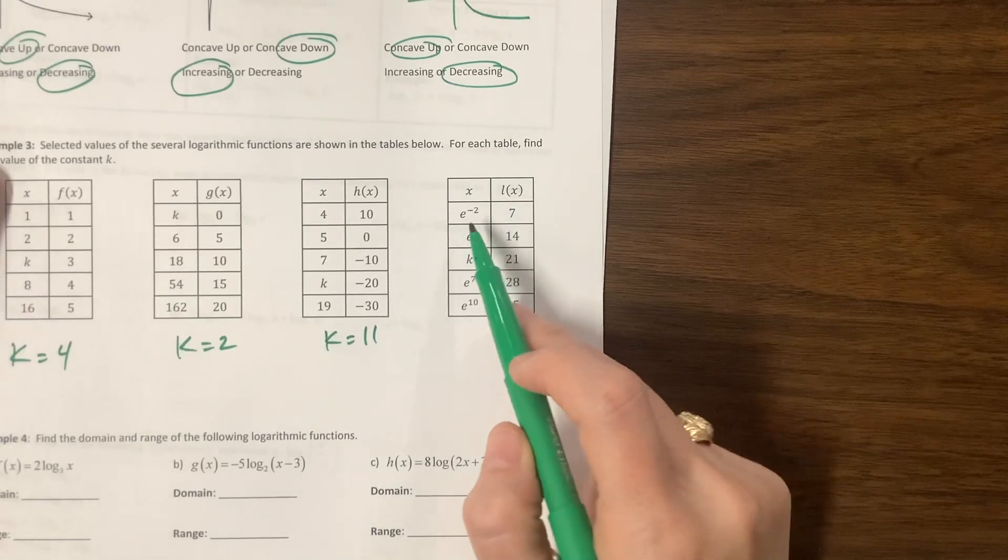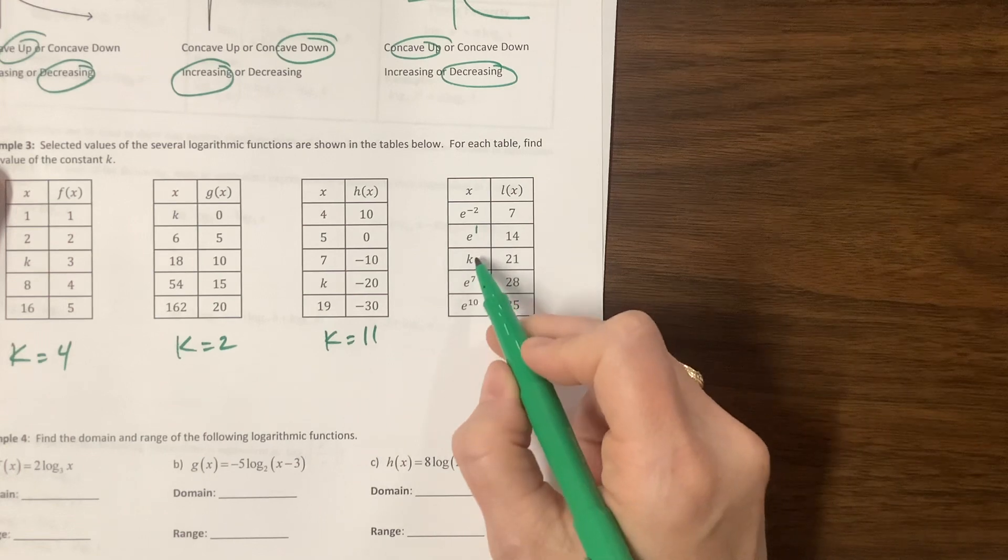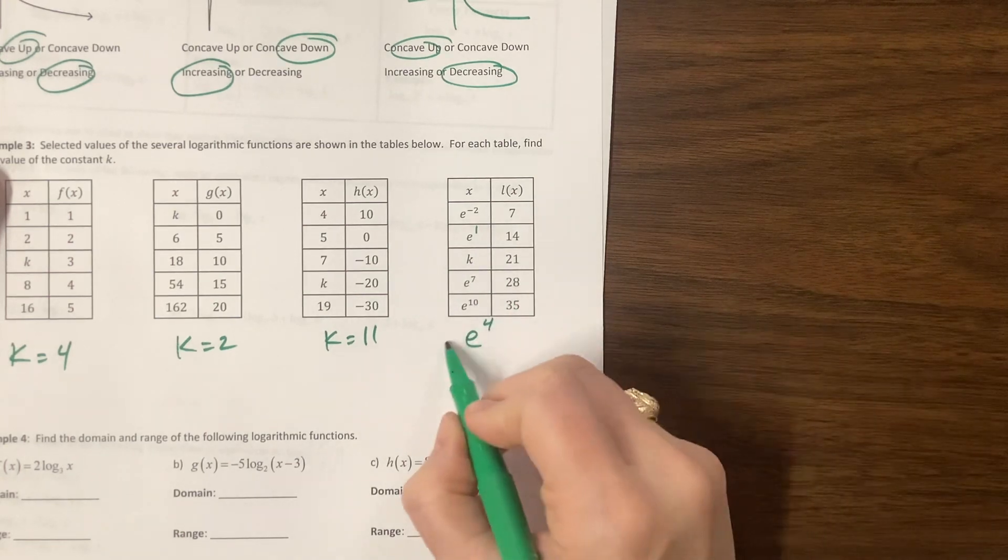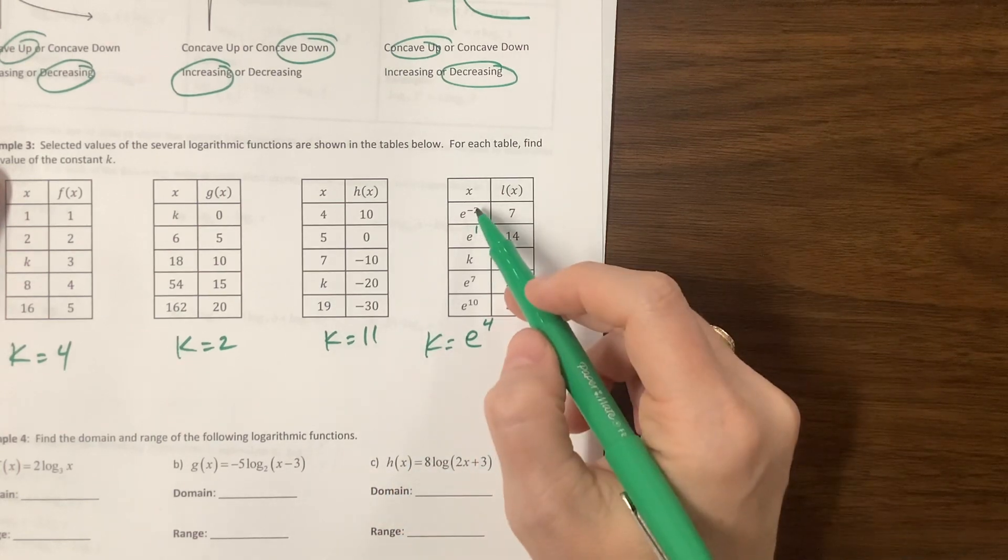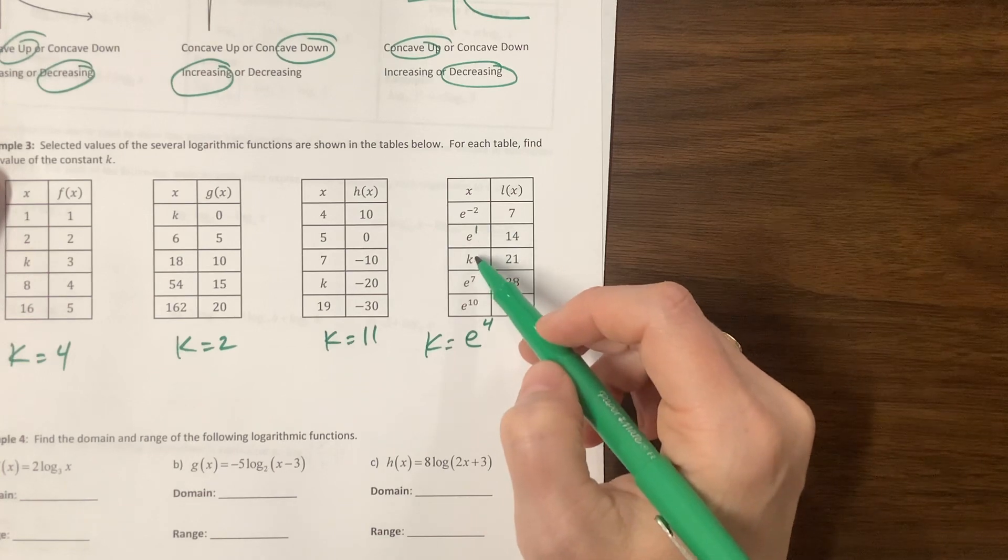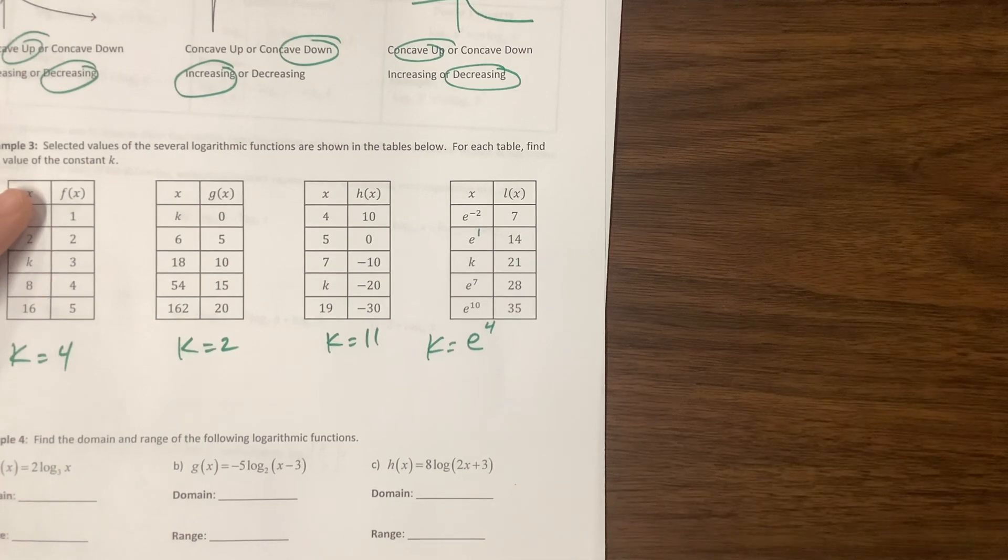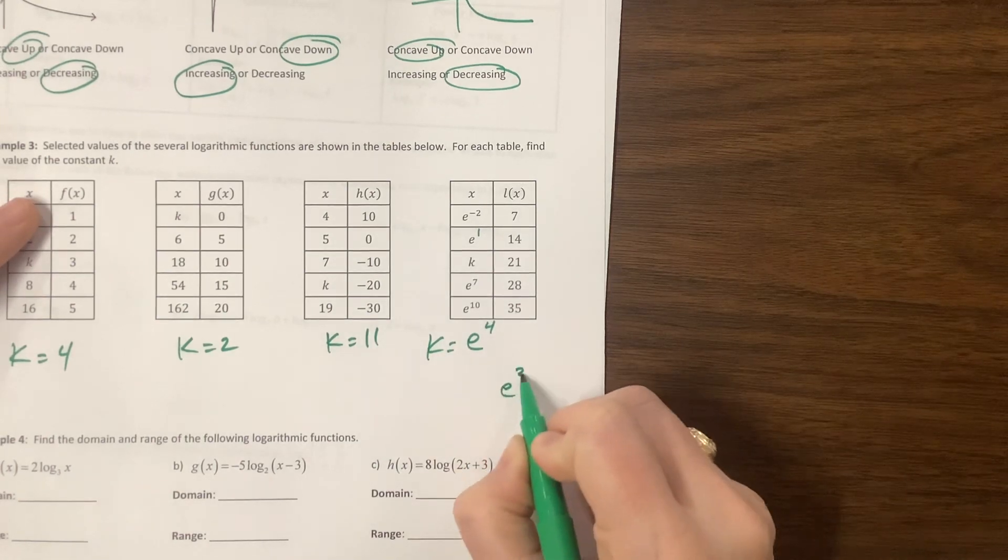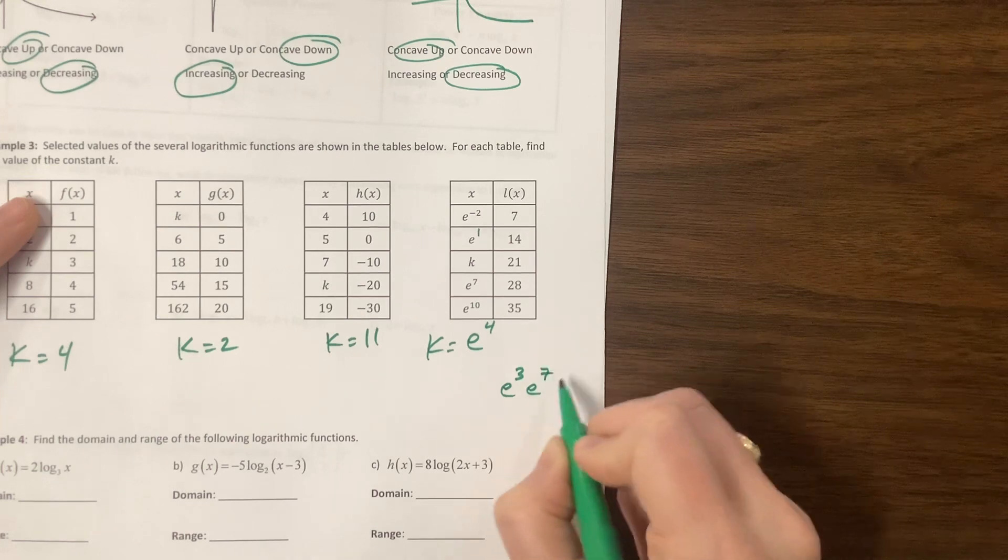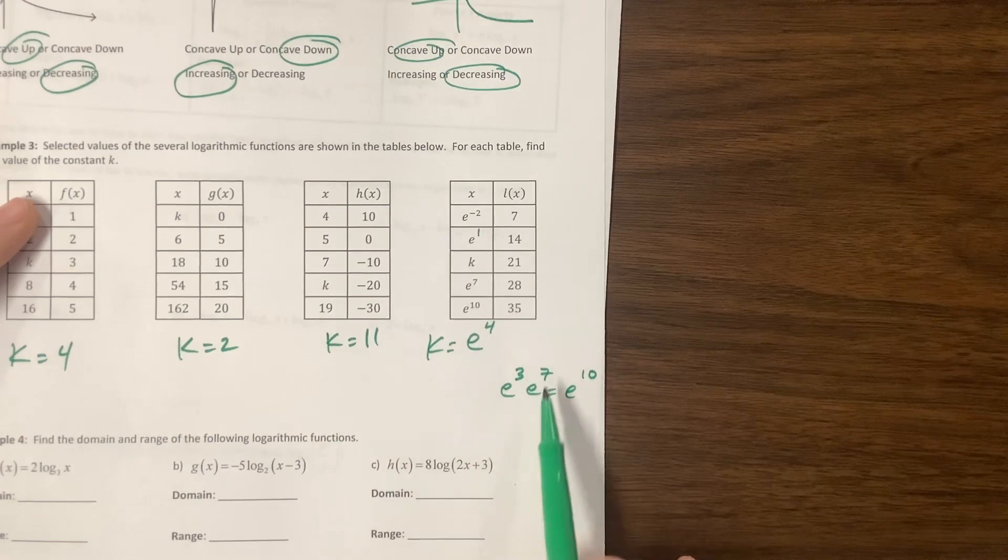Okay. On this one, when I, this is e to the negative one, negative two, e to the one, k, e to the seven. So my hope would be that this would be e to the fourth would be equal to k. Let's see, because then I can go negative two, add one. I lied. Add three gets me to one. Add three gets me to four. Add three gets me to seven. Add three. What I'm doing, I'm adding to my exponent, which really means that I'm multiplying. I'm multiplying by e cubed each time. So e cubed times e to the seventh would be equal to e to the tenth. So I'm adding in my exponent, which really means I'm multiplying.